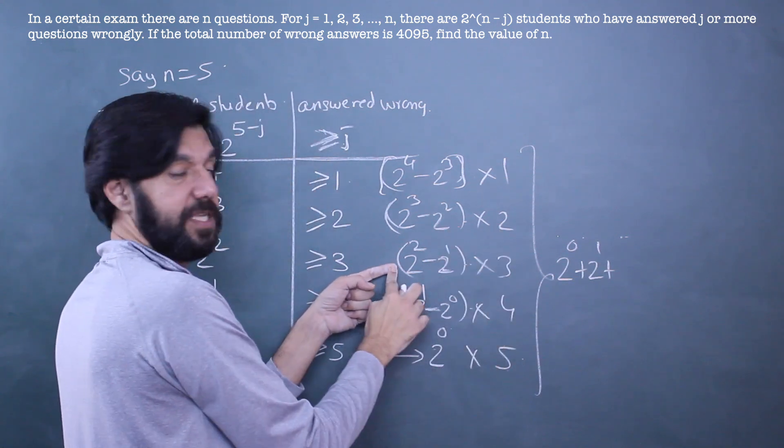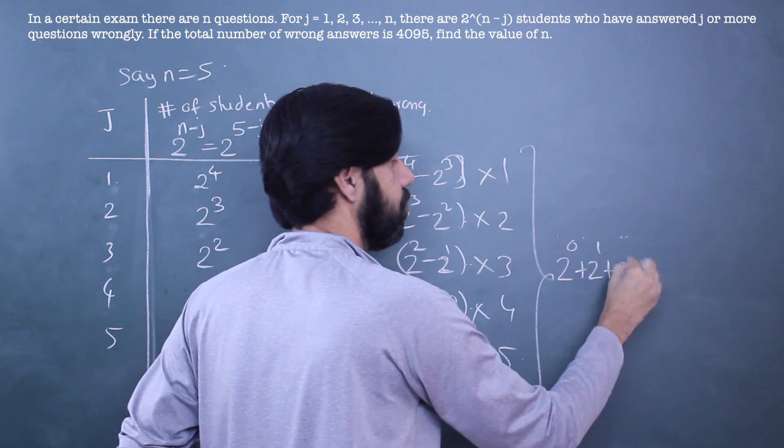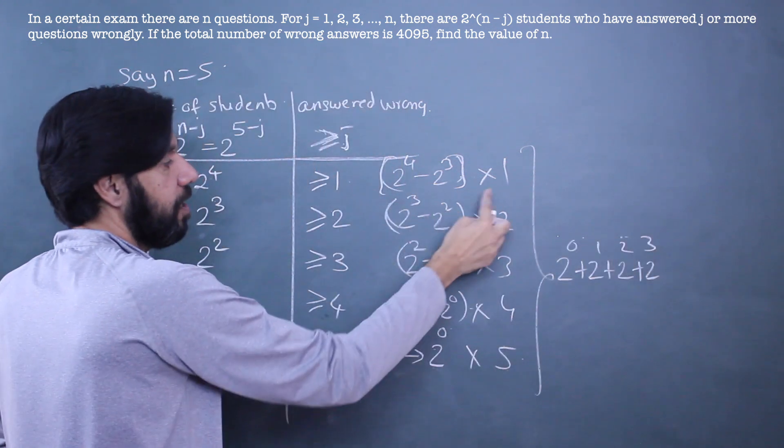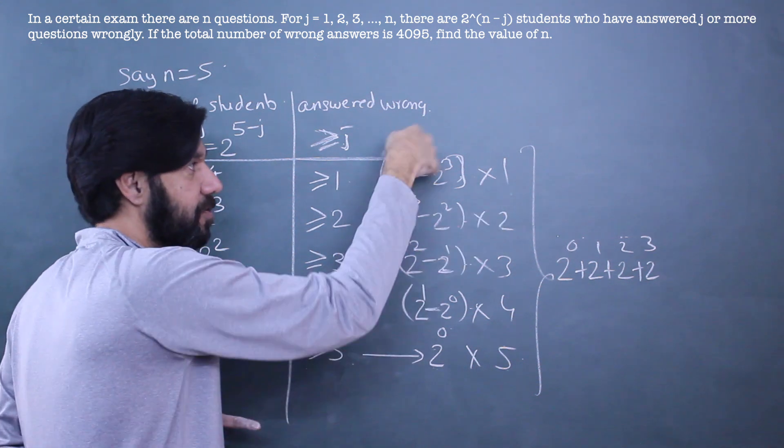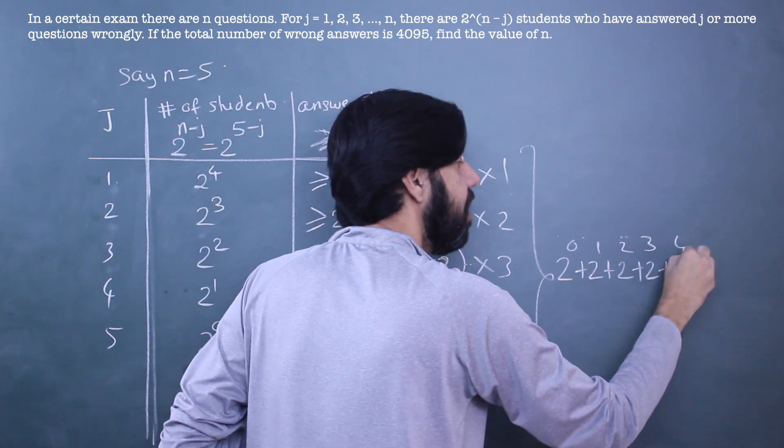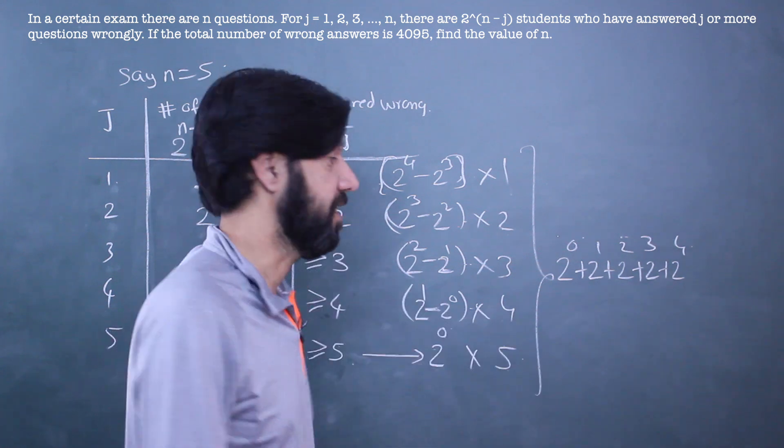Is that same with 2^2? Yes, 3 times 2^2 minus 2 times 2^2, so 2^2, 2^3. And what about 2^4? 2^4 is present only once. There's no subtraction involved anywhere or so on, it's just counted once. So this is the total number of wrong answers.